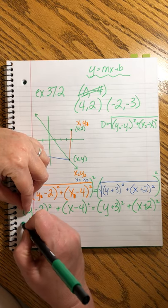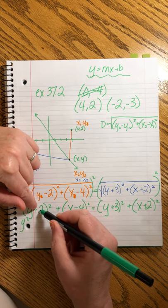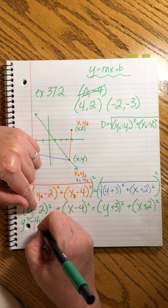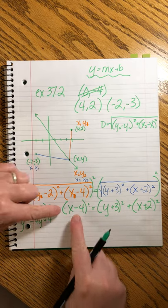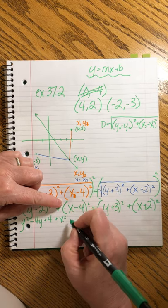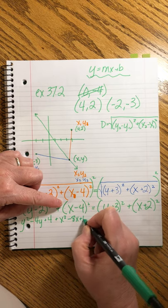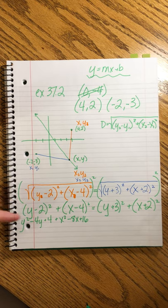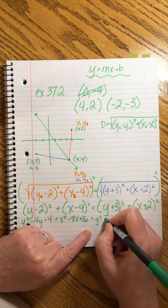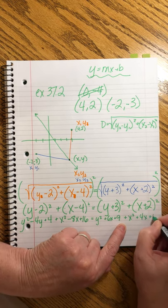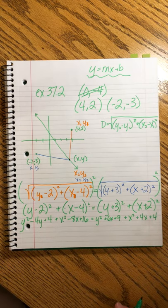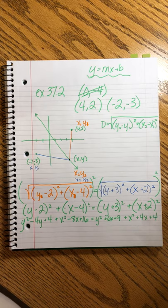Now what we're going to do is simplify it. It gets a little crazy, but it's not super tricky. What we're going to do first is we're going to square both sides to get rid of these square roots. So now we have (y - 2)² + (x - 4)² = (y + 3)² + (x + 2)².